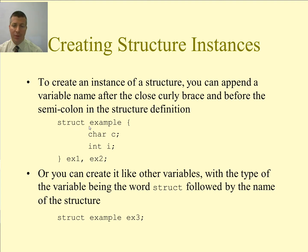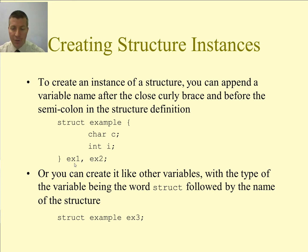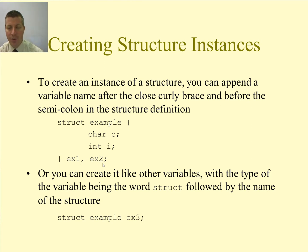Here is a sample structure — struct example, with char c and int i — and here are two variables I've created that are instances of that structure: ex1 and ex2. Those are the variables through which I will get access to the variables c and i.